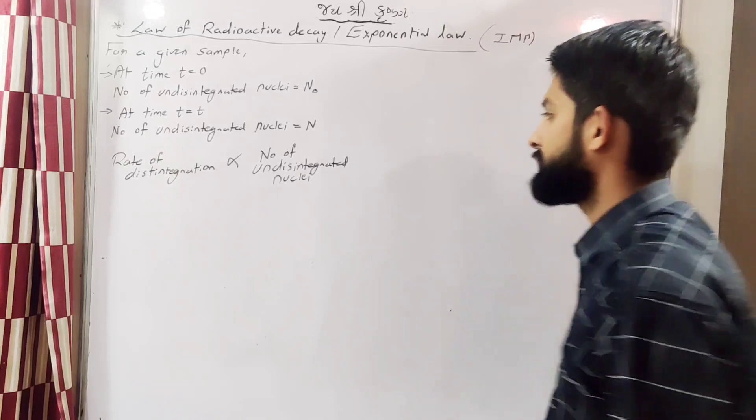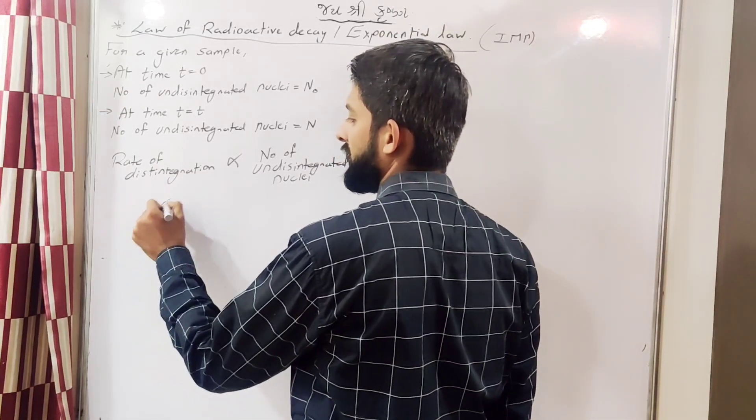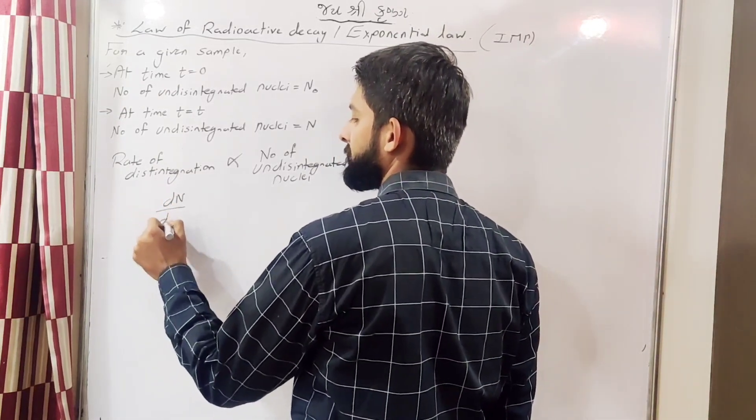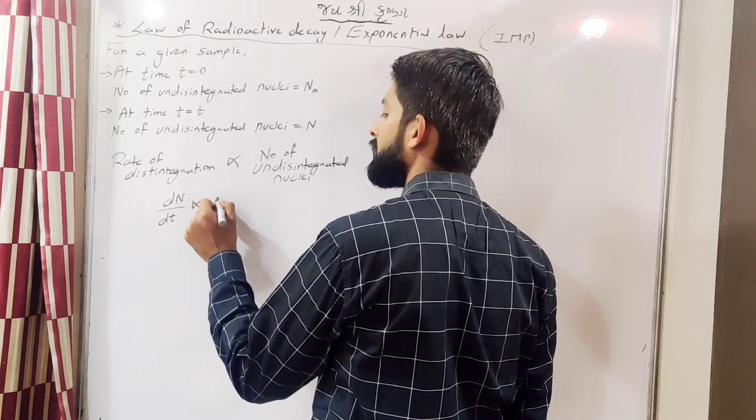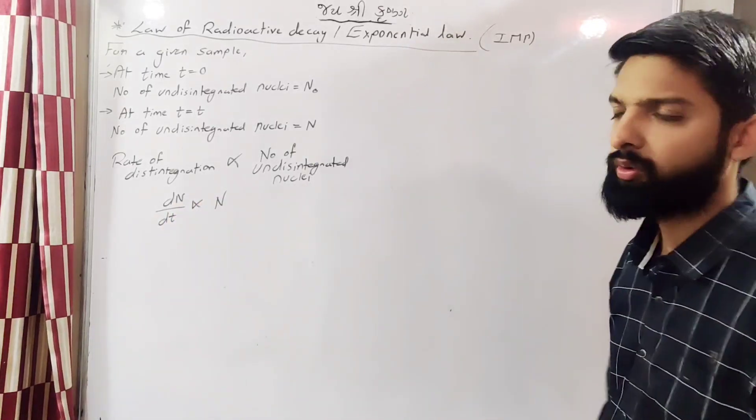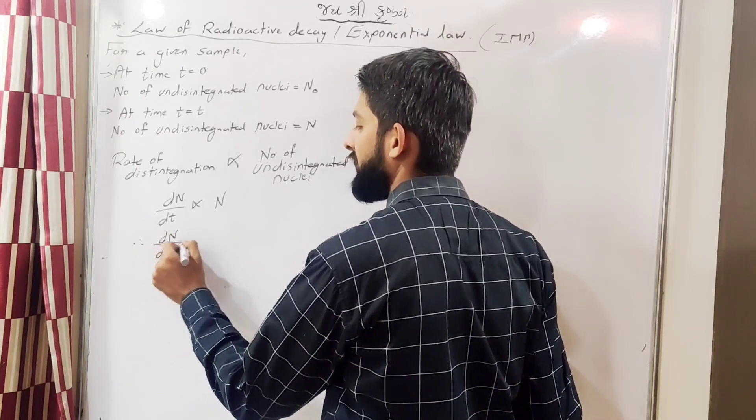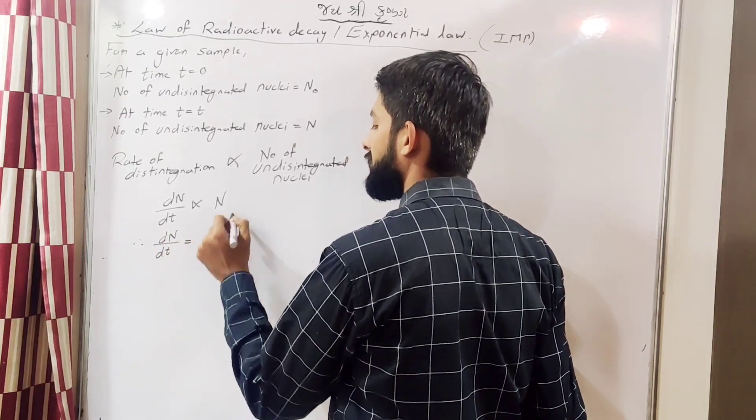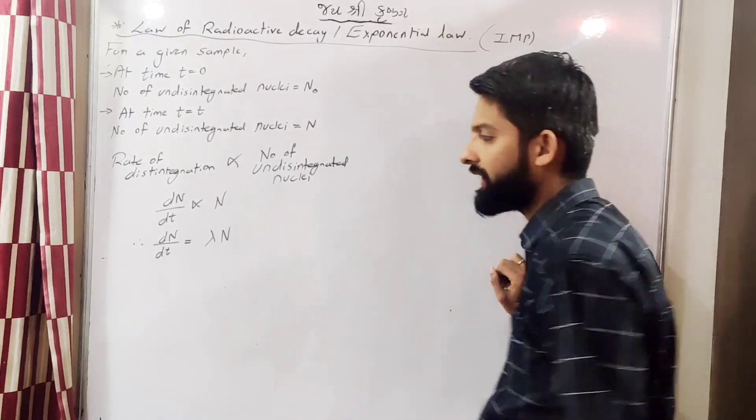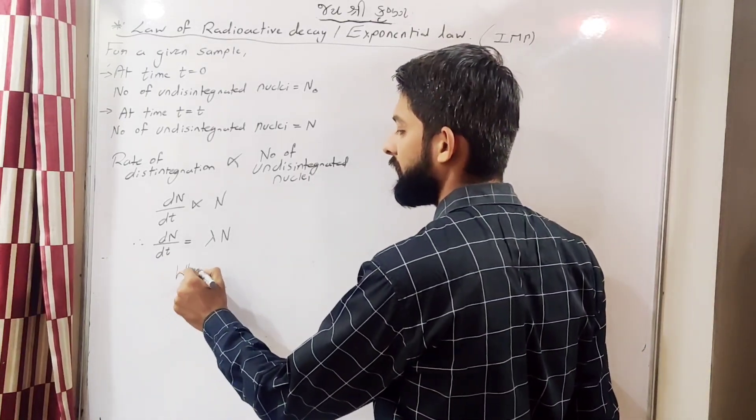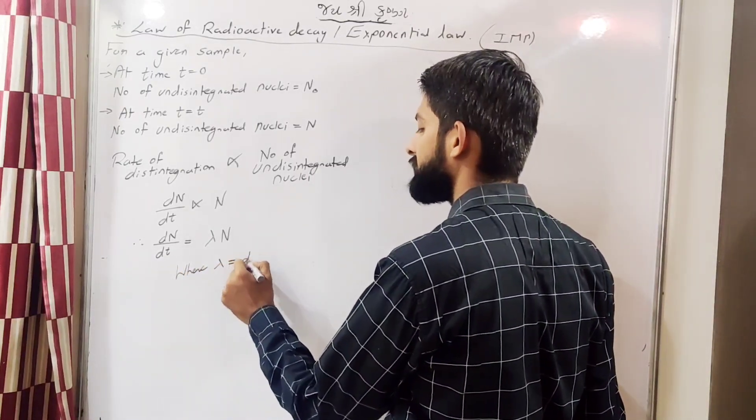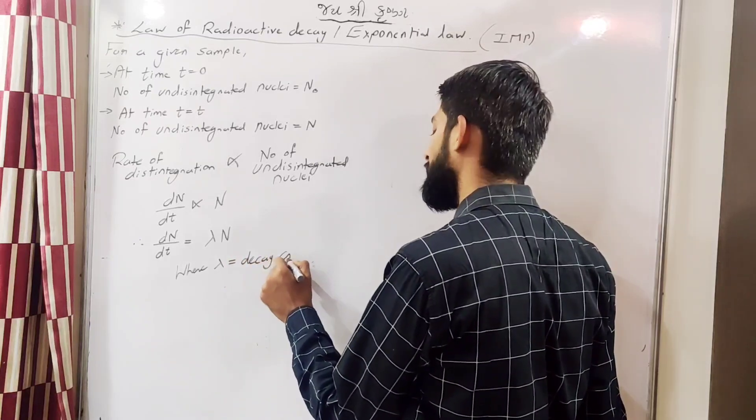Therefore, dn/dt is proportional to n. So dn/dt equals minus lambda n, where lambda is the radioactive decay constant.